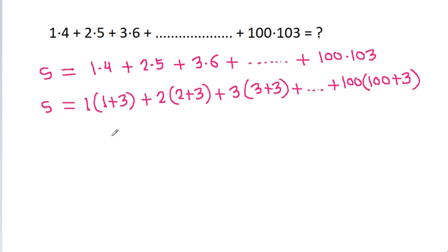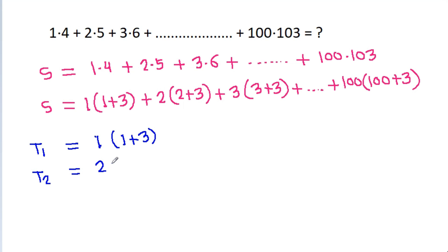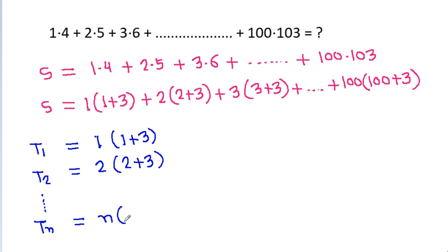So, the first term t1 is equal to 1 times (1 plus 3). The second term t2 is equal to 2 times (2 plus 3). So, the nth term tn will be equal to n times (n plus 3).